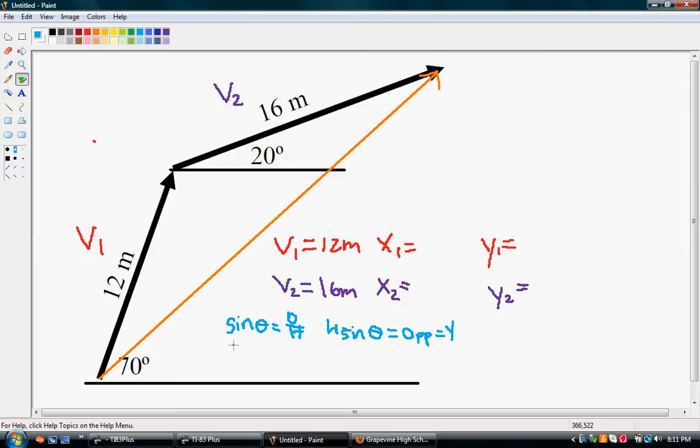We also have cosine theta, which is adjacent over hypotenuse. And we could rearrange this, hypotenuse cosine theta equals the adjacent, which is typically, and for the purposes of this tutorial, is our x.